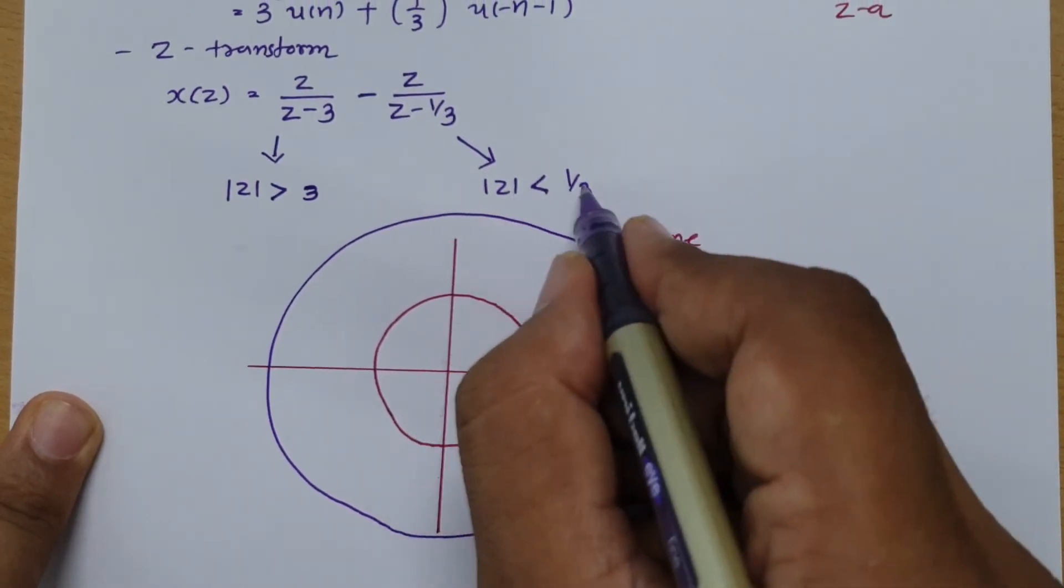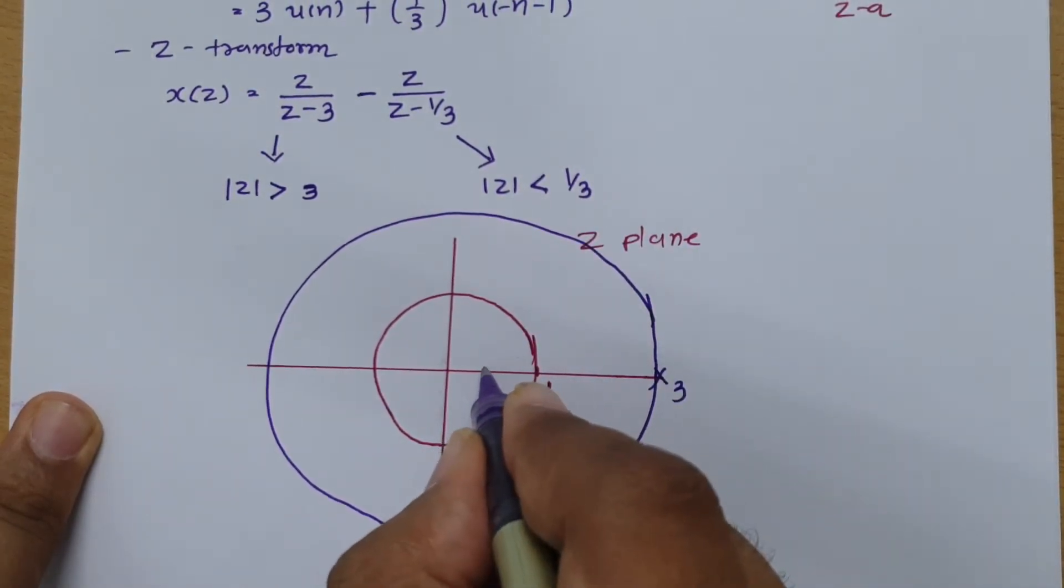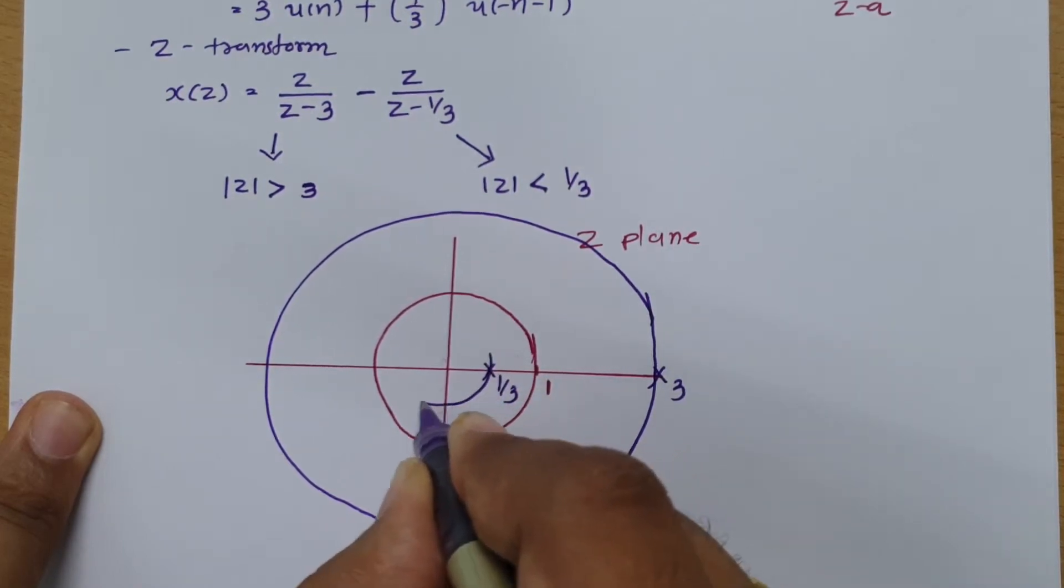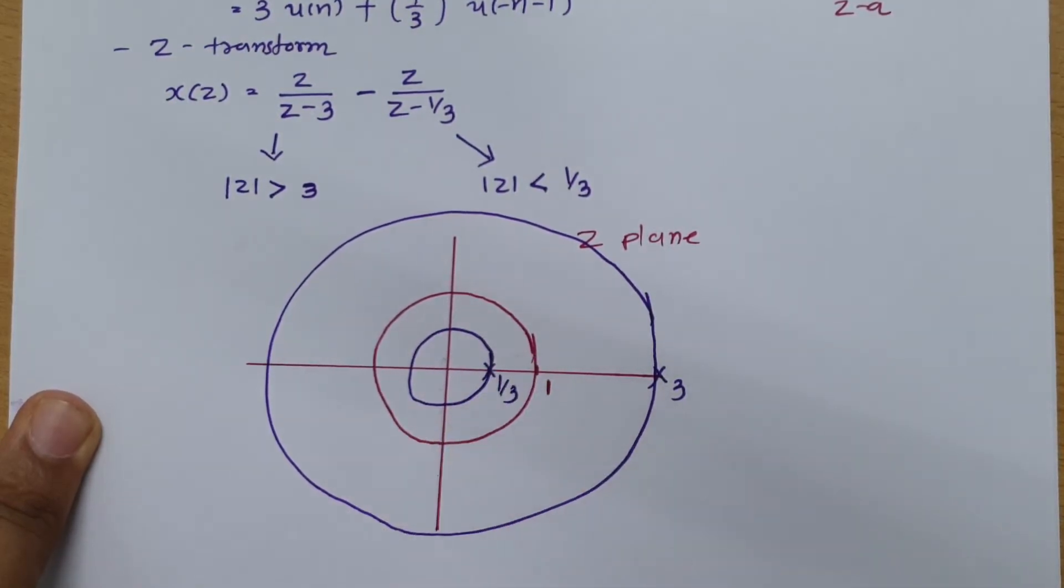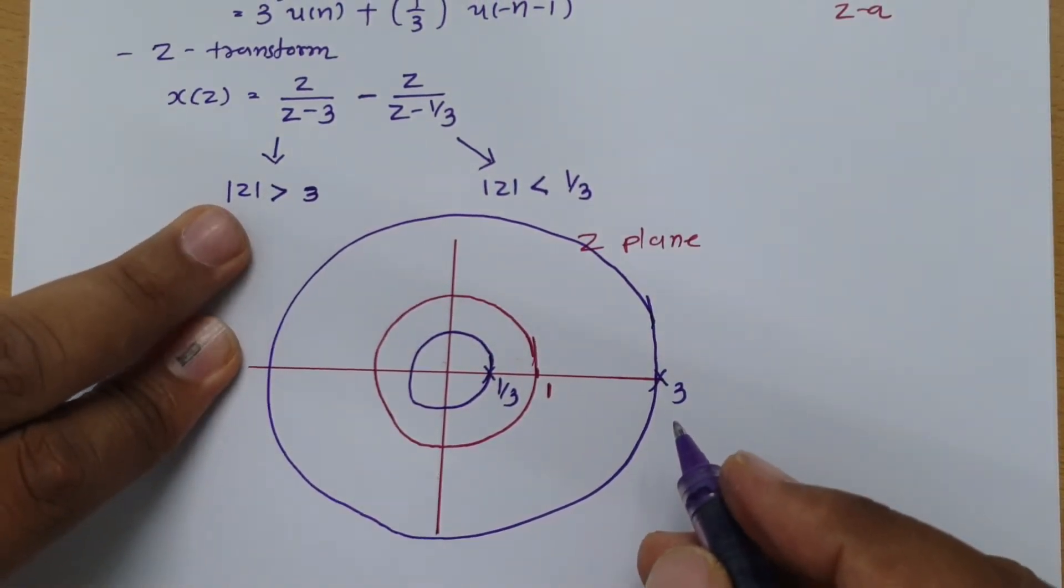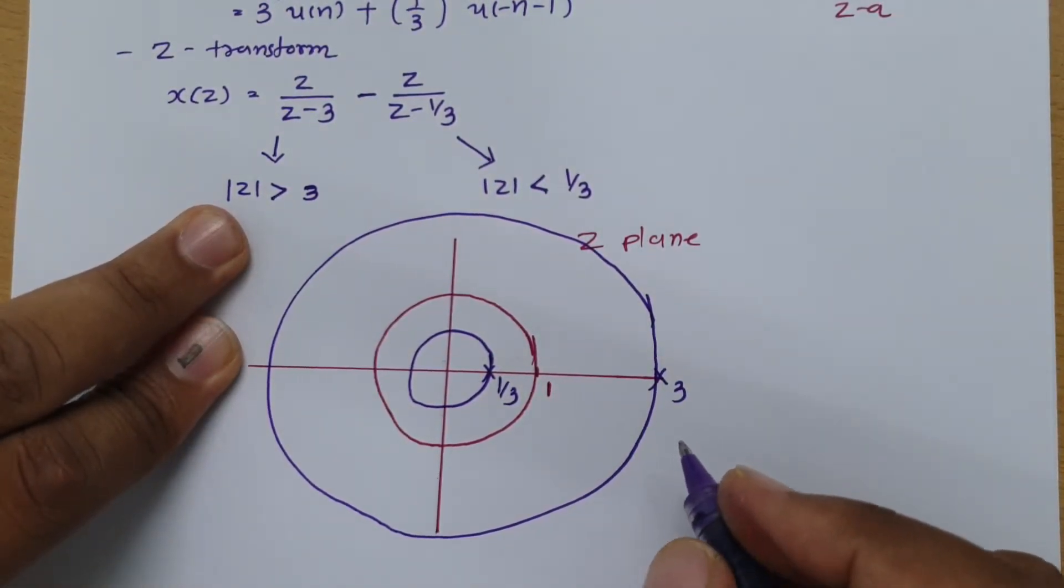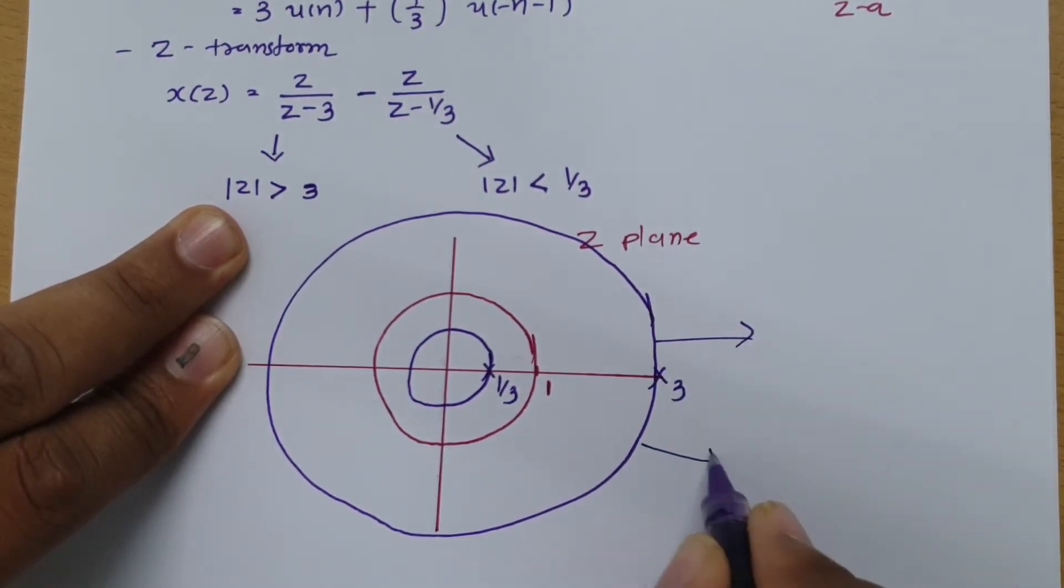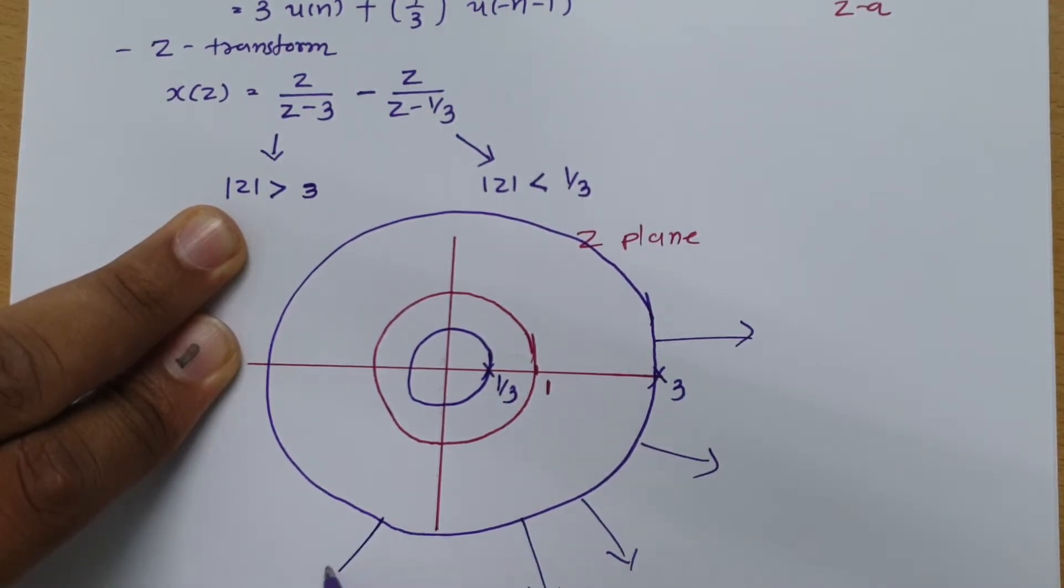So if I say here magnitude is 3, then first I will make a circle from 3. Now one pole is happening at 1/3. If I say here there is 1/3, then I need to make a circle at 1/3.